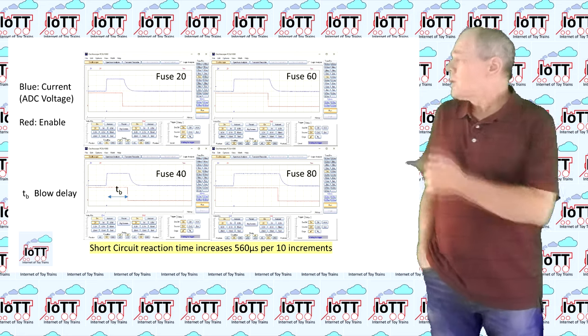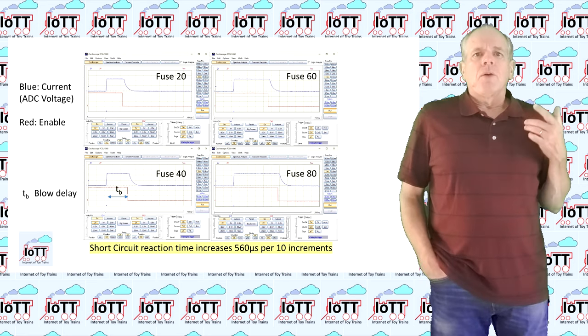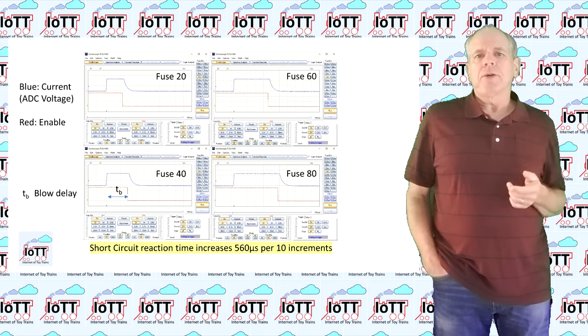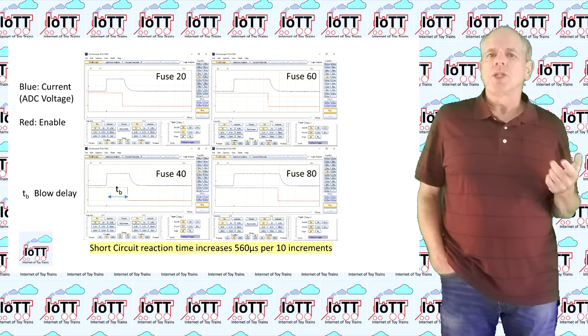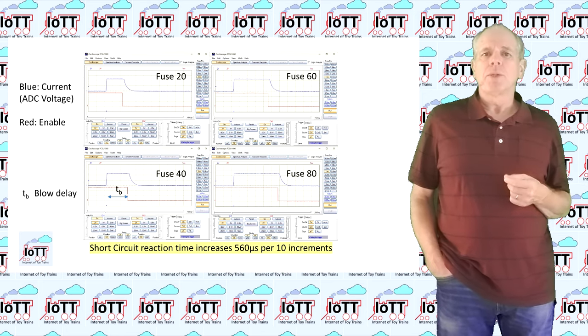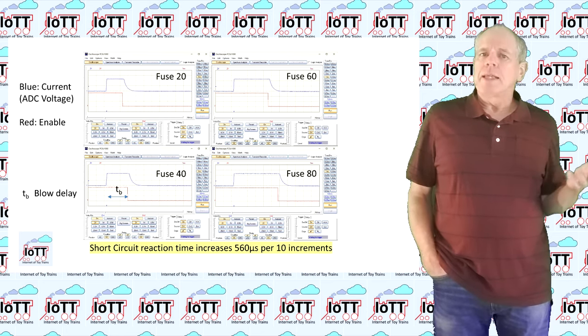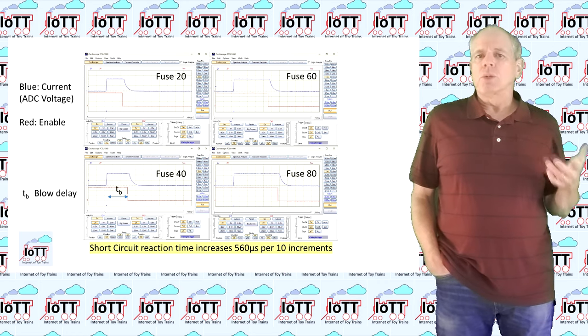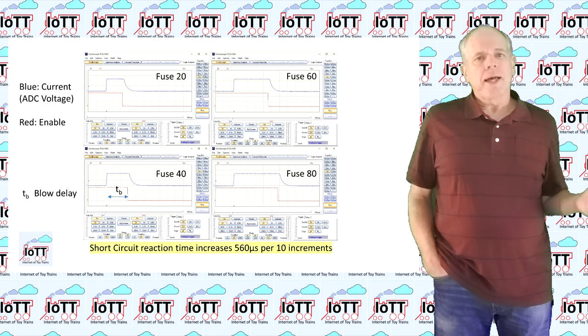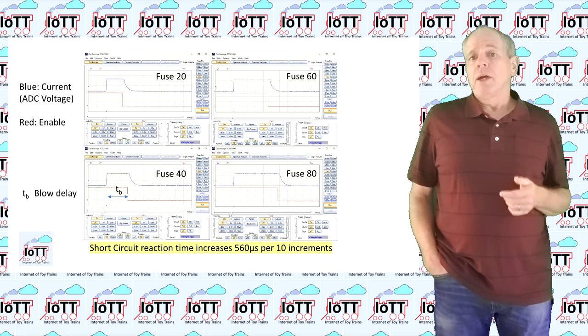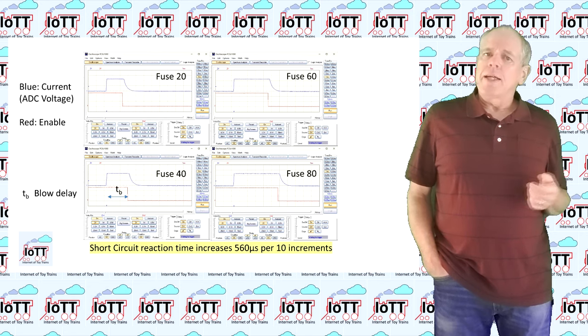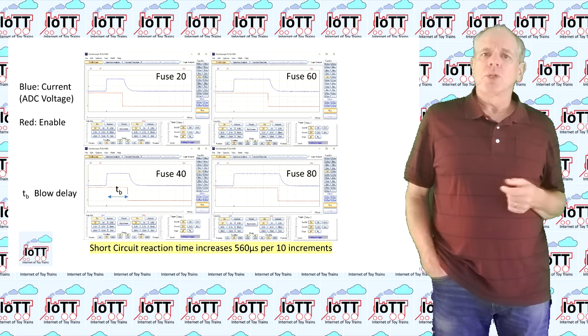On these oscilloscope screenshots, we see the impact of different settings. The blue line shows the track current measured at the analog to digital converter input. When a short circuit occurs, it shoots up to about 4.7V. The value is limited by a Zener diode in order to protect the analog input of the Arduino. Because of that, the real value is unknown, but it is higher than 11.5A.